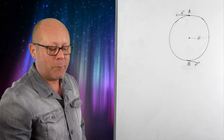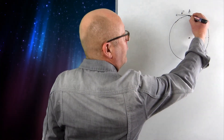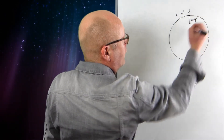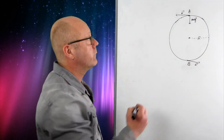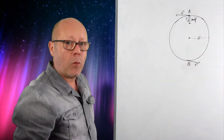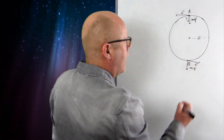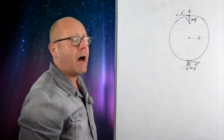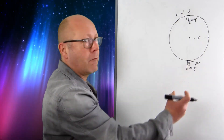Draw the forces on the mass at points A and B. At point A there is the force due to gravity and there will also be the tension of the string. At point B, you also have gravity, and the tension at B will be higher than at A because the object is on the lower part of the circle and is being pulled by gravity.